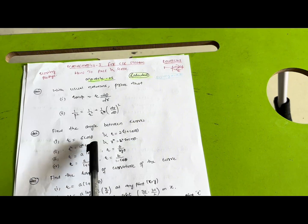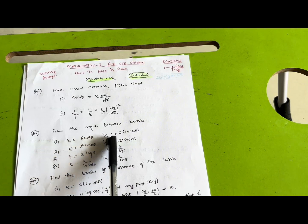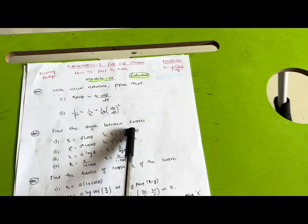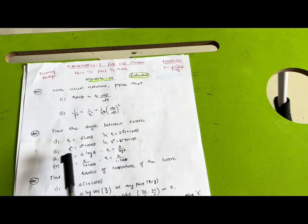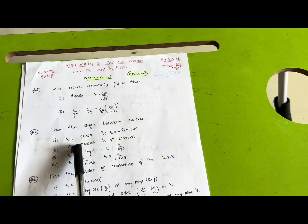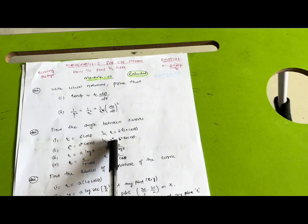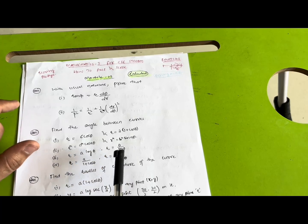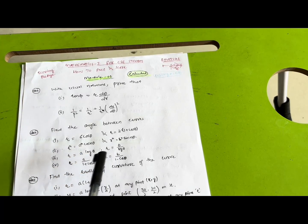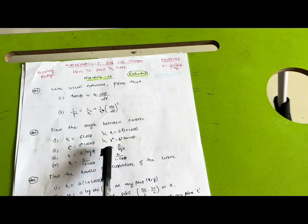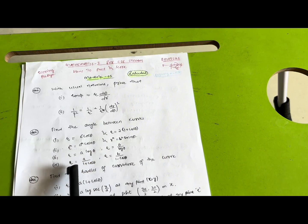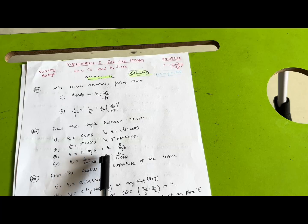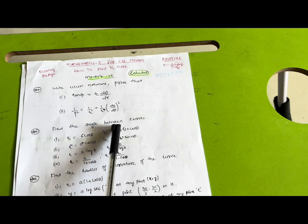Next, we have varieties of questions on angle between curves. The super important ones are: r = 6cosθ and r = 2(1 + cosθ) — find the angle between these two curves. Next, rⁿ = aⁿ cos(nθ) and rⁿ = bⁿ sin(nθ). Videos are available on YouTube — I will provide the link in the description box so you can understand the concepts and solve varieties of problems. Also: r = a log θ, r = θ/log θ, r = a/(1 + cosθ), and r = b/(1 − cosθ).